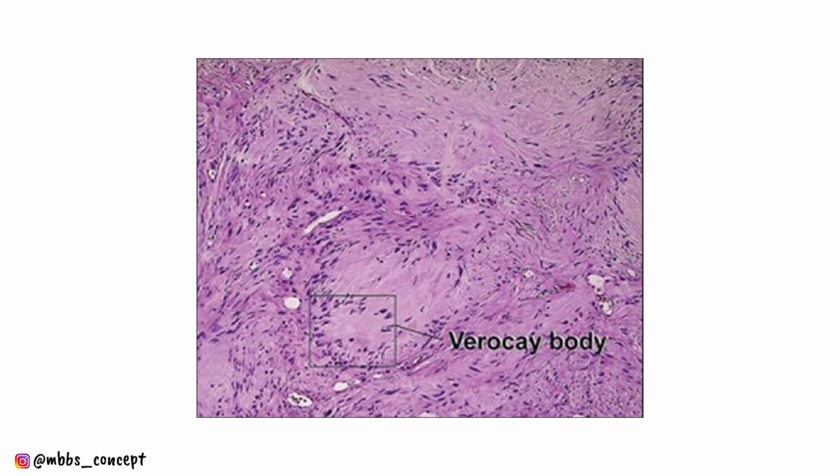The next question was on Verocay bodies — they did not give an image, but they asked where Verocay bodies are present. Schwannoma was the answer to that question.